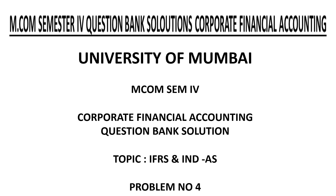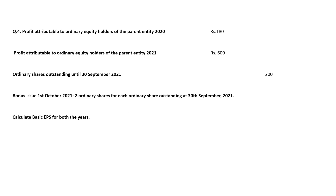MCOM Semester 4 Corporate Financial Accounting Question Bank Solution, Topic: IFRS and Indian AS, Problem No. 4. The problem: Profit attributable to Ordinary Equity Holders of the Parent Entity 2020 is Rs. 180; for 2021 it is Rs. 600. Ordinary Shares Outstanding until 30 September 2021 is 200. Bonus Issue on 1 October 2021: 2 ordinary shares for each ordinary share outstanding at 30 September 2021. Calculate Basic Earnings Per Share for both years.